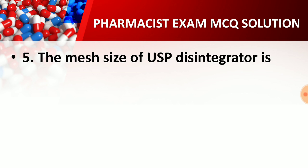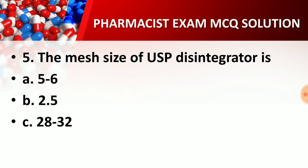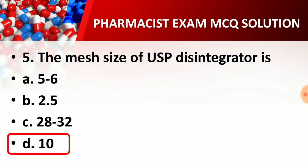Question number five: The mesh size of the USP disintegrator is — option A, 5 to 6; option B, 2.5; option C, 28 to 32; option D, 10. The right answer is option D, 10. In the USP Disintegrator Test Apparatus, the basket used to hold the tablet or capsule has a mesh size of 10. Remember that the mesh size of the USP disintegrator basket is 10.